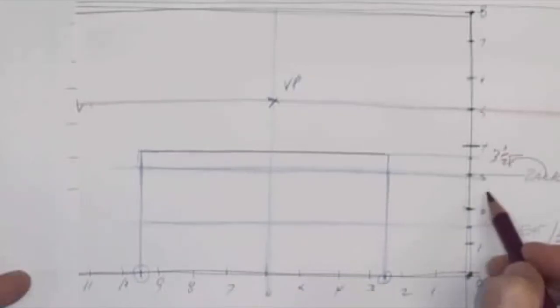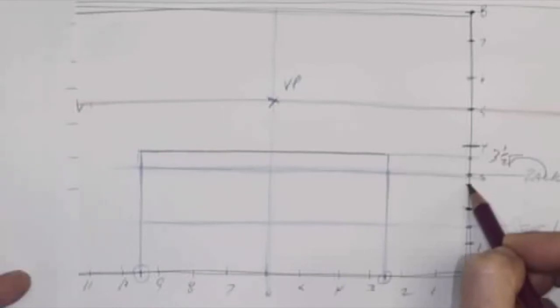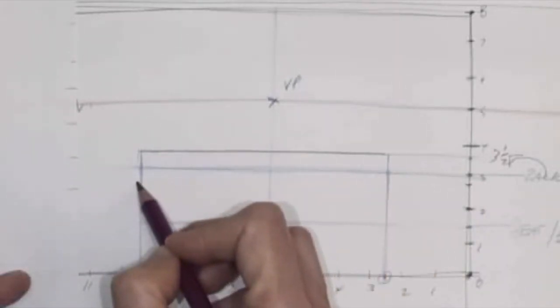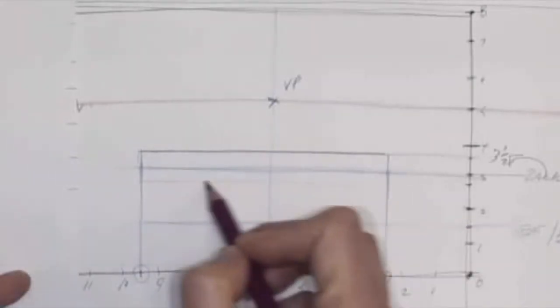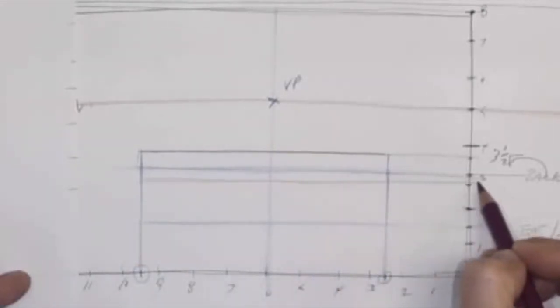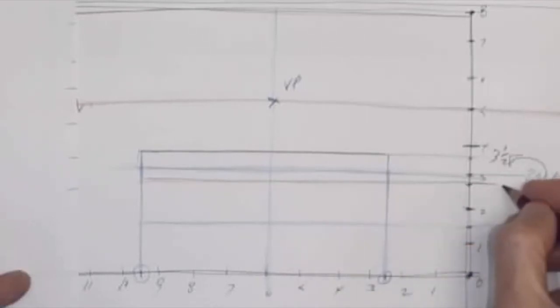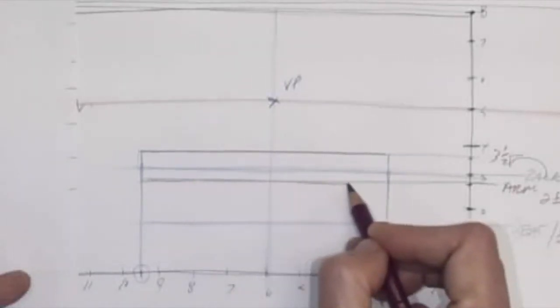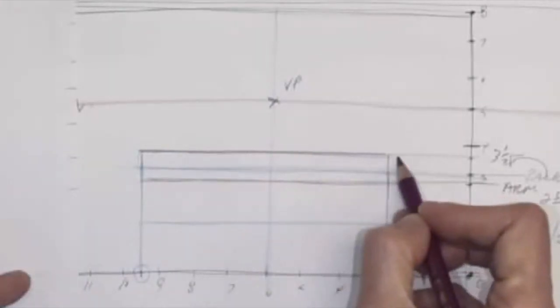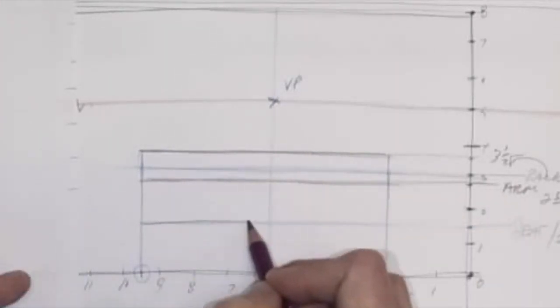We're going to do 3 1⁄2. And our arm, we're going to do a little more. Not quite 3, but a little more than 2 1⁄2. So that'll be our arm. 2 1⁄2 plus feet. Okay. So we've got the height of the back, the height of the arm, the height of the seat.